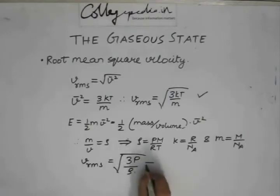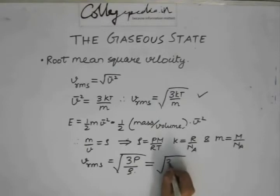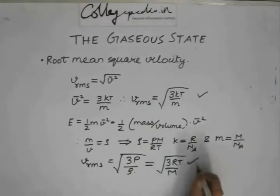From this, we can also get this to be as this quantity. So, these are the three expressions for the root mean square velocity.